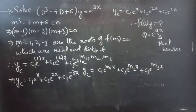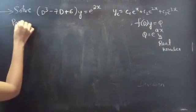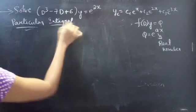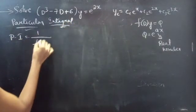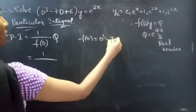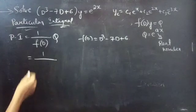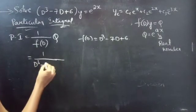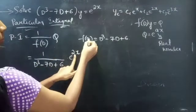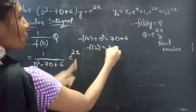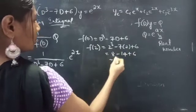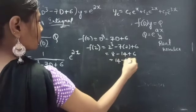Now we will find the particular integral. The particular integral is given by (1/F(D))·Q, where F(D) = D³ - 7D + 6 and Q = e^(2x). Replacing D with a = 2: F(2) = 2³ - 7(2) + 6 = 8 - 14 + 6 = 0. Since F(2) = 0, we cannot directly substitute.